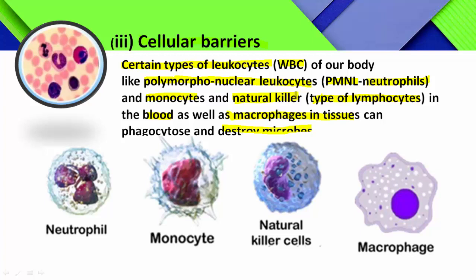Polymorphonuclear leukocytes — leukocytes are WBCs. The term polymorphonuclear means a change in the shape of the nucleus; poly means many — many nuclear shapes are present. These polymorphonuclear leukocytes are nothing but PMNL neutrophils.